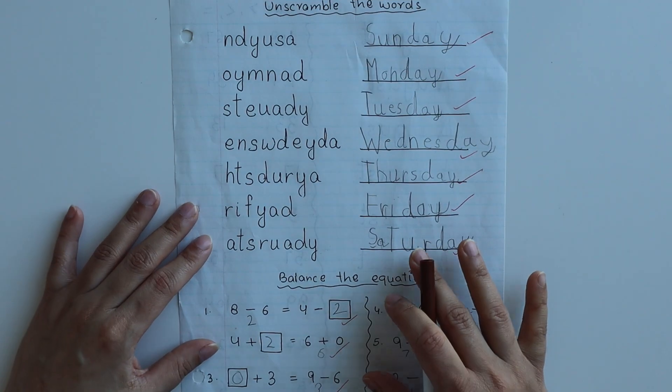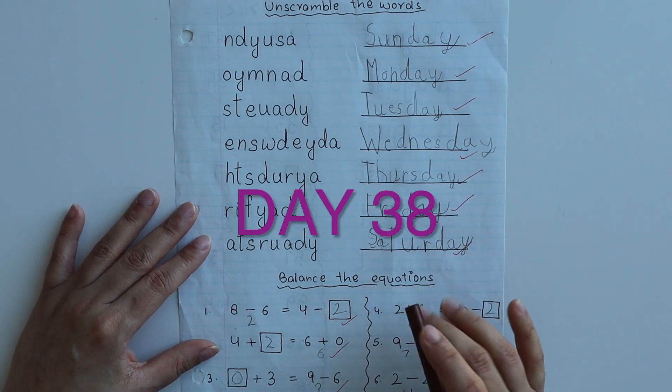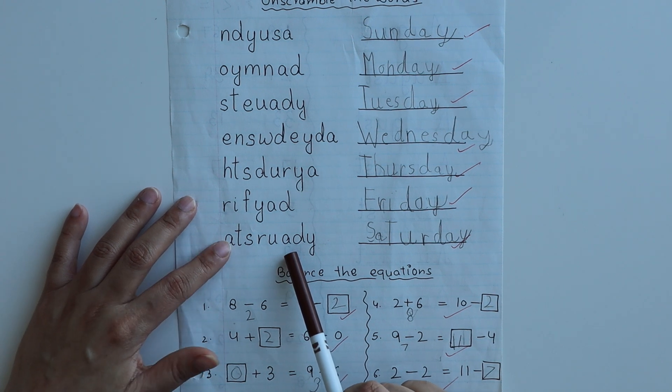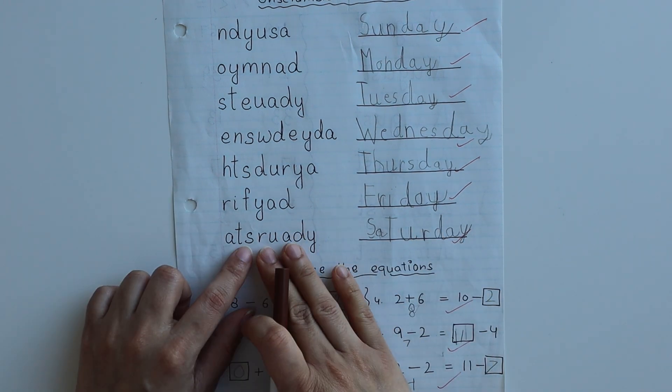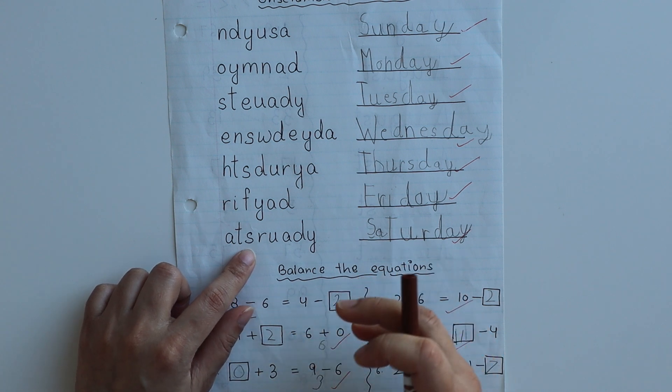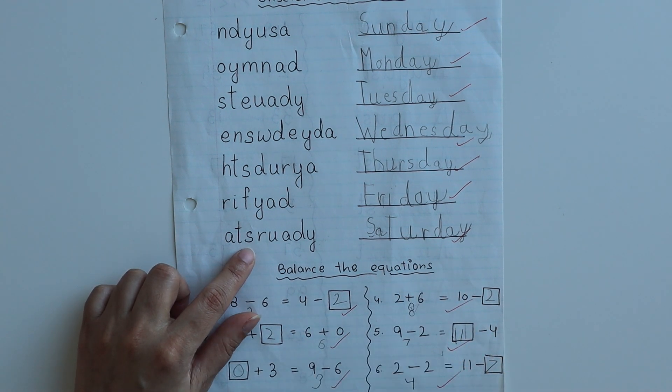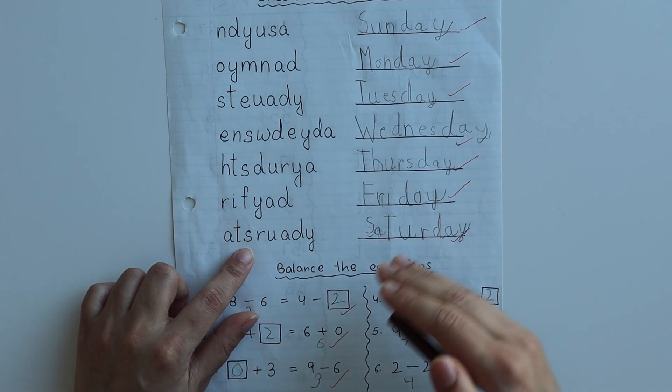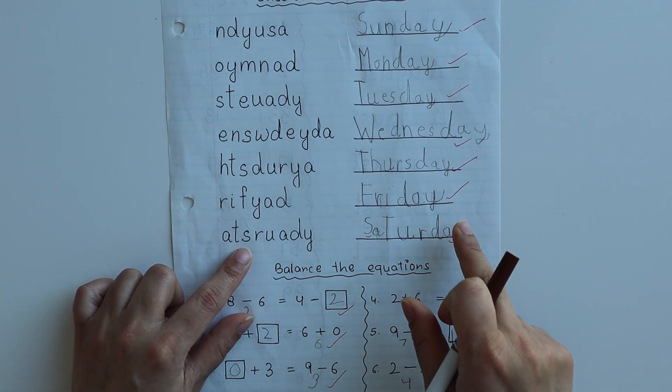Let's begin with the video. The first worksheet is unscramble the words for days of the week. You can see on the left side the days' names are scrambled, meaning the letters are written backwards, and the right spelling is written on the right side.